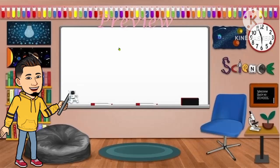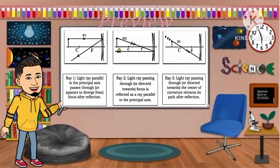Now, to illustrate the image formed in a curved mirror, let us remember the following rays. There are three rays: ray 1, ray 2, and ray 3. Ray 1 is a light ray parallel to the principal axis that passes through the focus after reflection. Ray 2 is a light ray passing through the focus that is reflected as a ray parallel to the principal axis. Ray 3 is a light ray passing through the center of curvature that retraces its path after reflection. In this video, we're going to use only two rays: ray 1 and ray 2.